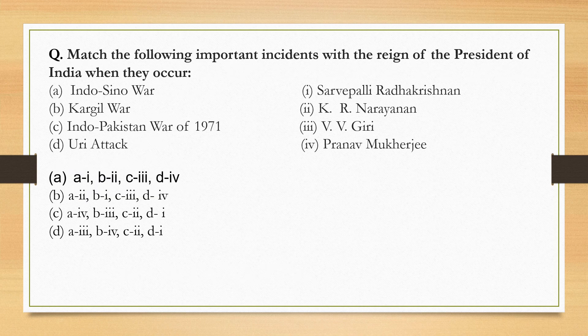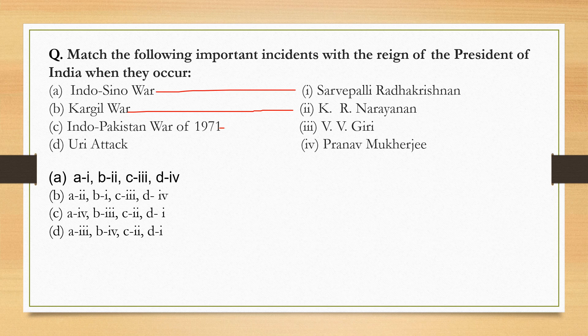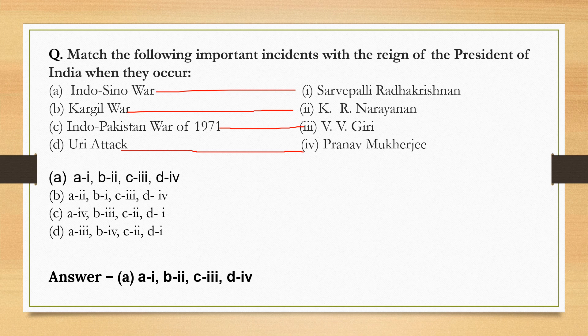Match the following important incidents with the reign of the President of India when they occurred. Indo-Sino war — during Sarvepalli Radhakrishnan's reign. Kargil war — during K.R. Narayanan's reign. Indo-Pakistan war of 1971 — during the Presidentship of V.V. Giri. Uri attack — during the Presidentship of Pranab Mukherjee. So the correct option is Option A.